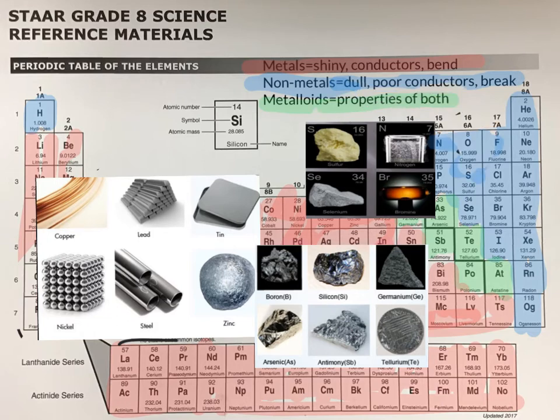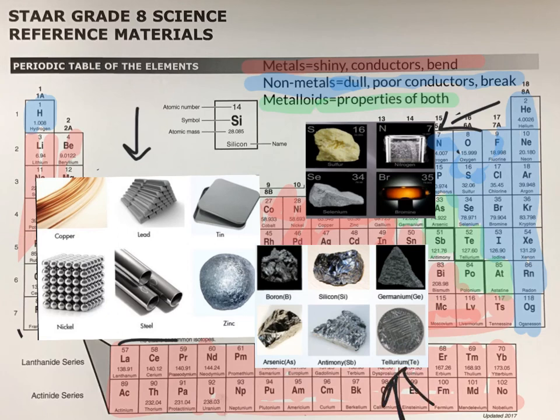To recap: metals are the most common elements found on the periodic table. They are generally shiny, good conductors, they bend, and are most often found as solids. Nonmetals appear on the right side of the periodic table and can be classified as solid, liquid, or gases. They are generally dull, poor conductors of heat and electricity, and they break easily instead of bending. The third group are your metalloids, which are found along the staircase or the black zigzag line on the periodic table, and they have properties of both metals and nonmetals.